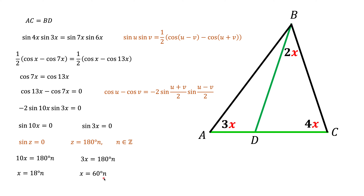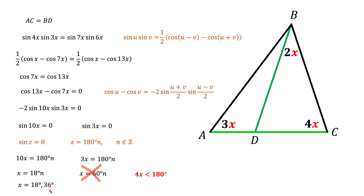We check which of those work. Angle C is 4x, and it must be less than 180°. Even at x equals 60°, the angle 4x equals 240°, which exceeds 180°. So none of the solutions from the x equals 60n family work. For x equals 18n, the candidates are 18°, 36°, 54°, 72°, and so on. Checking which of these satisfy all the angle conditions, we find two options: x equals 18° or x equals 36°.